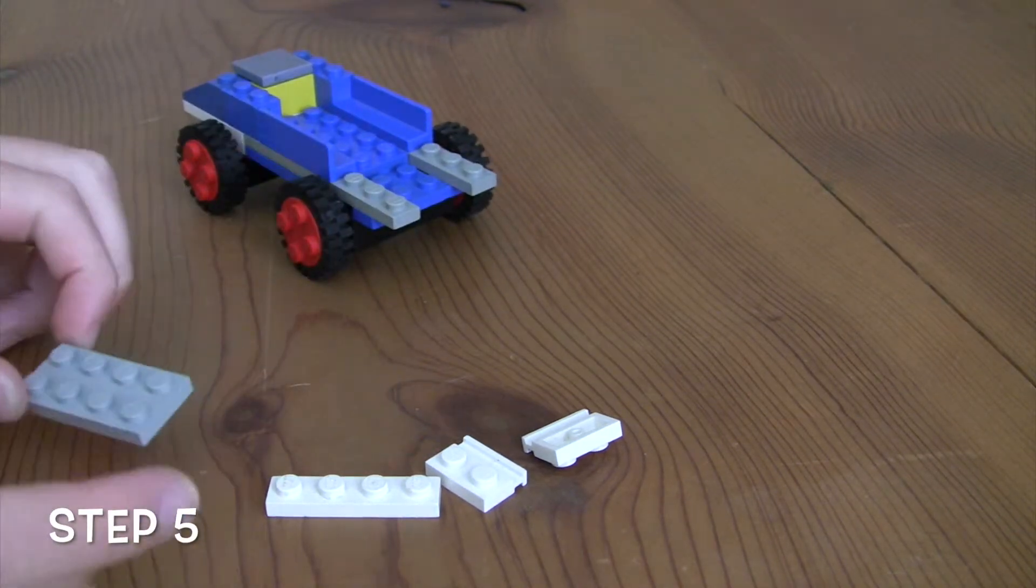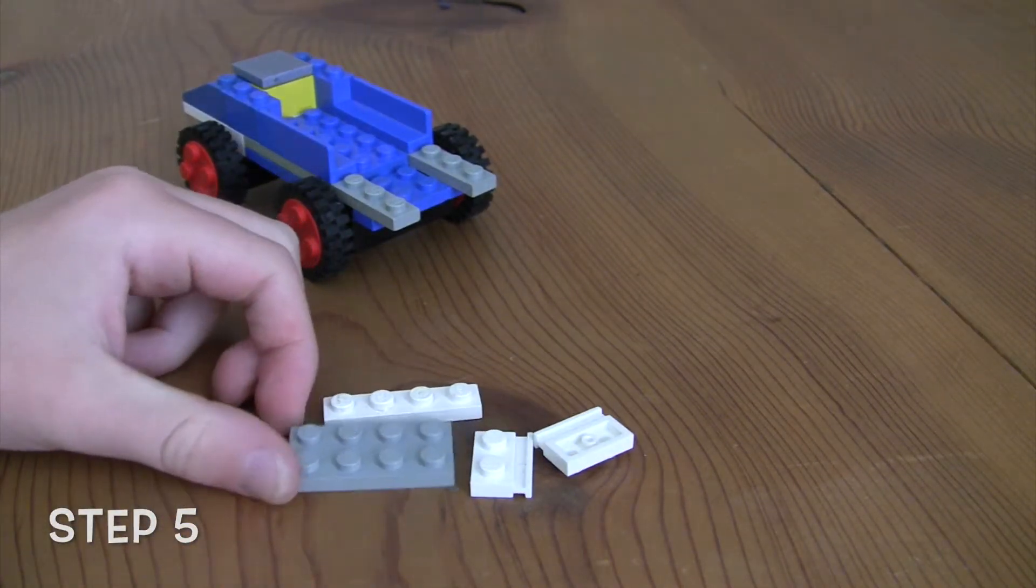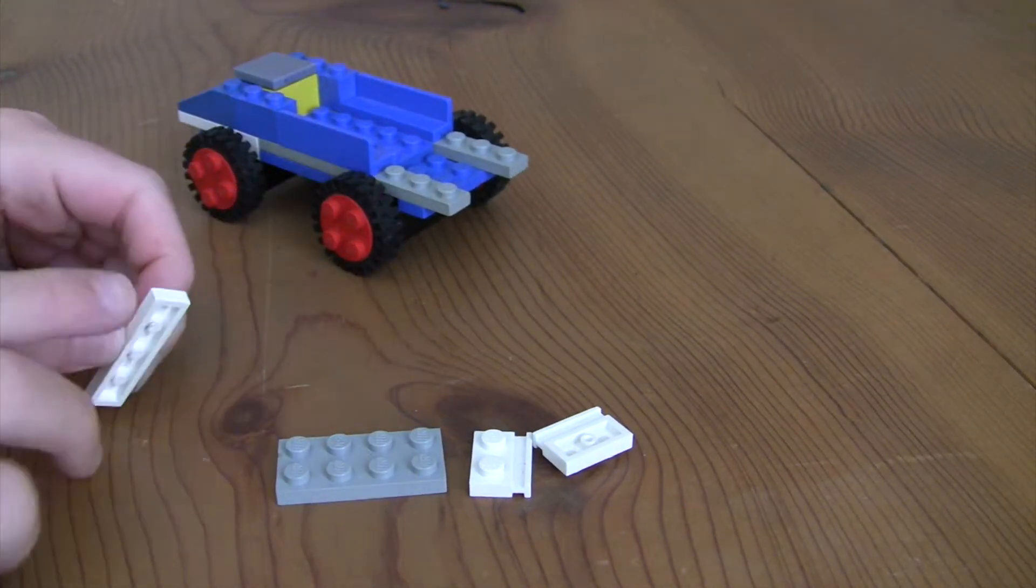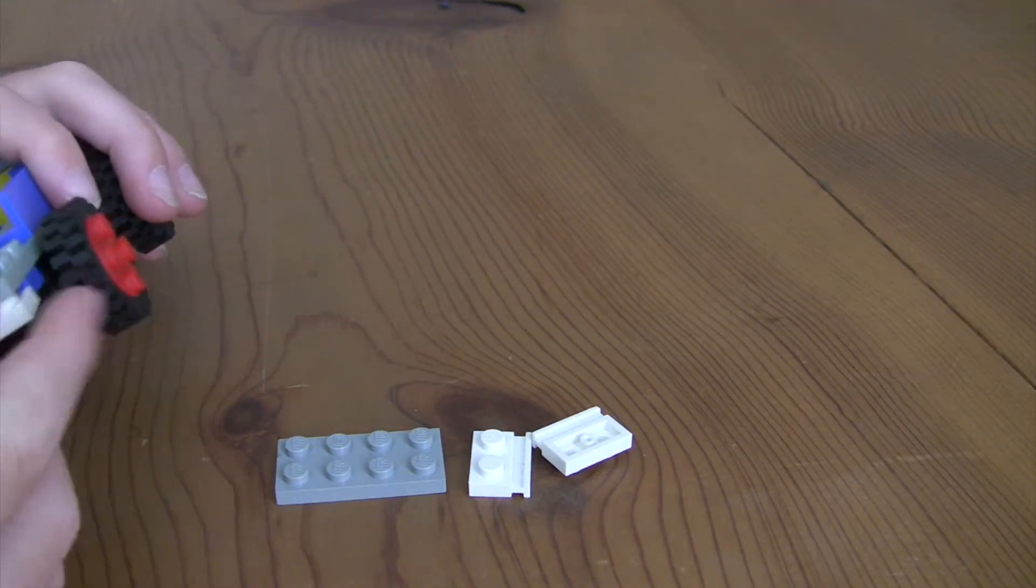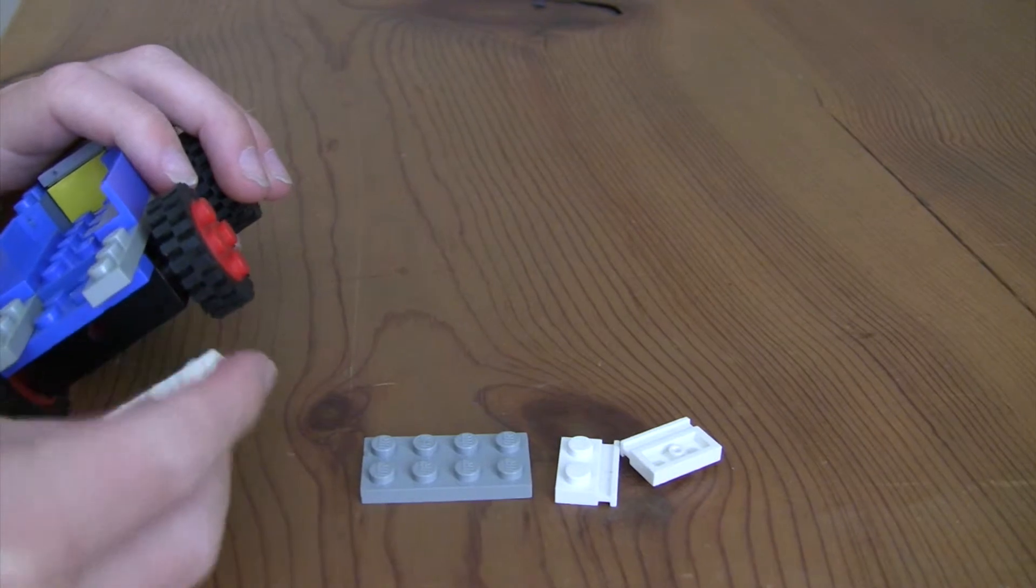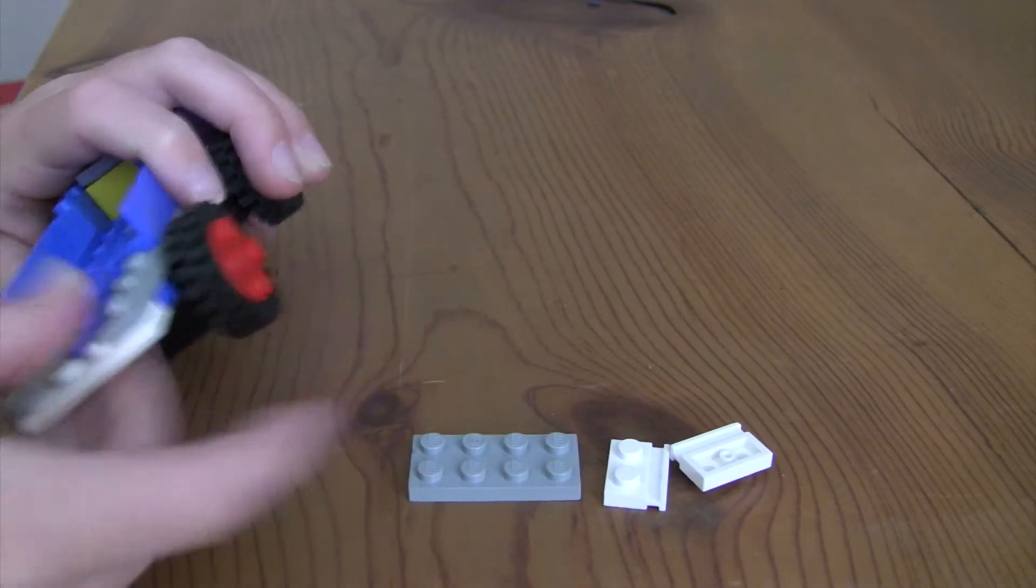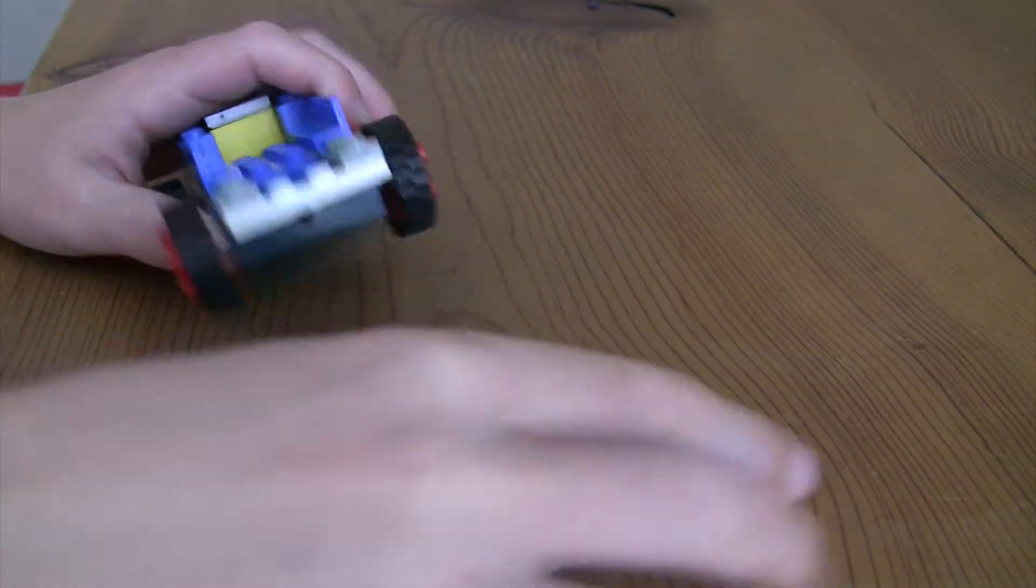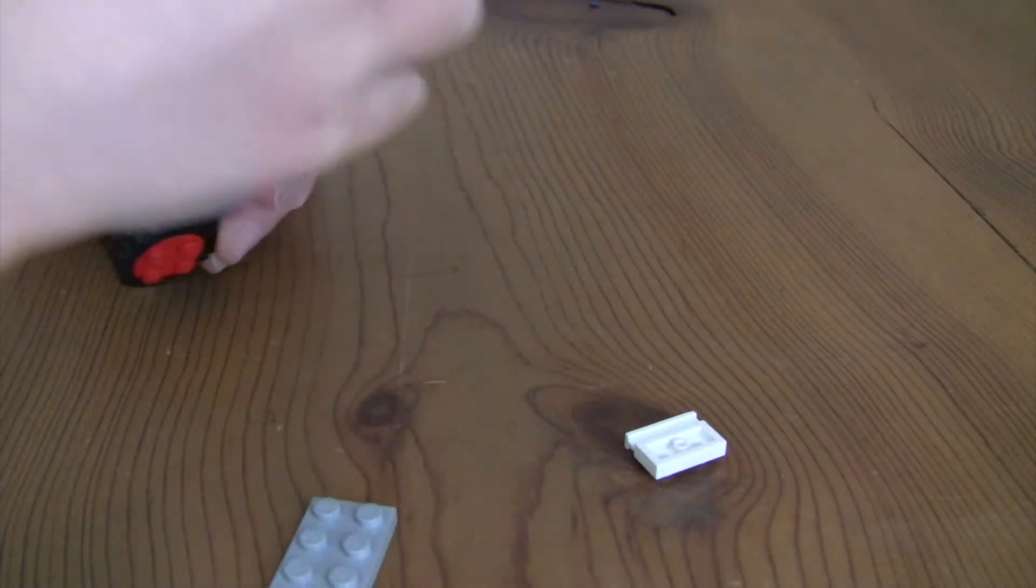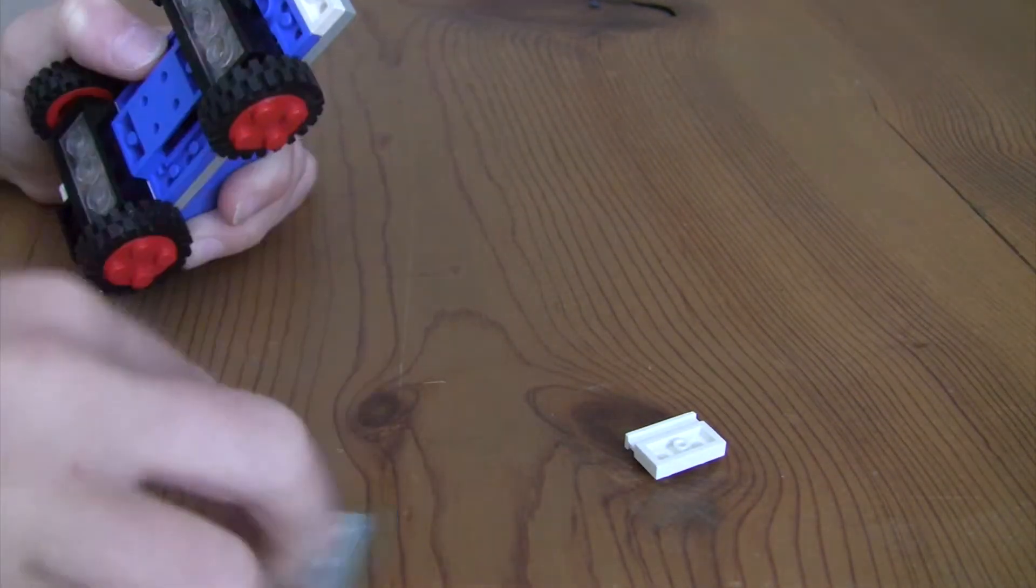Now you're just going to take a 2x4. And then what you're just going to take your card, just place a 1x4 on the back, like that. Take this, put these on the bottom, just like so.